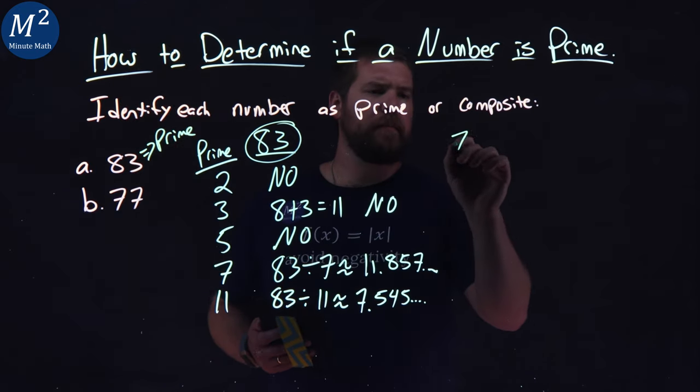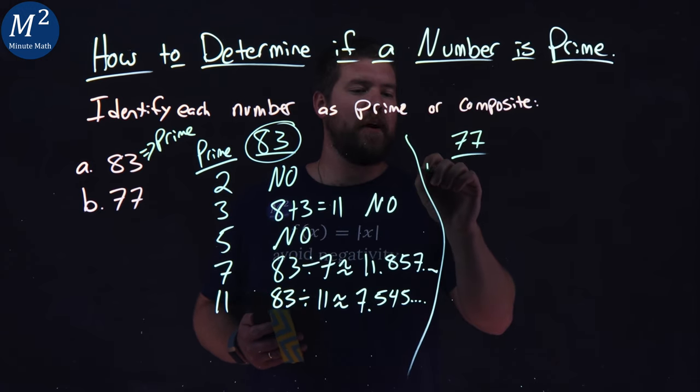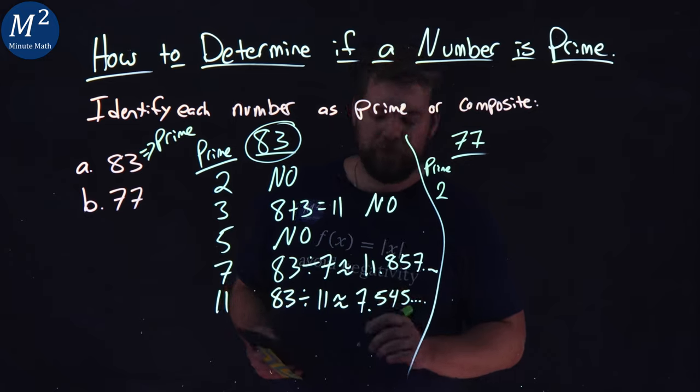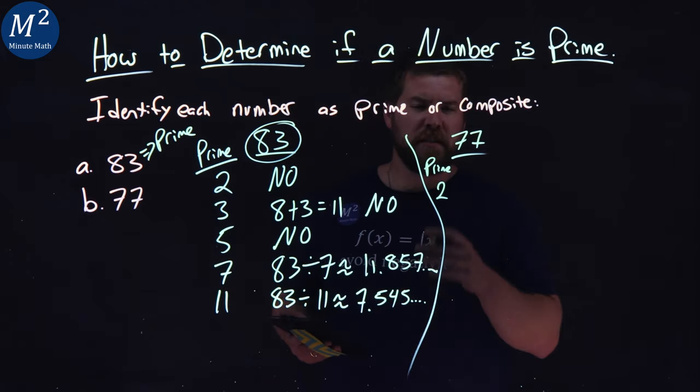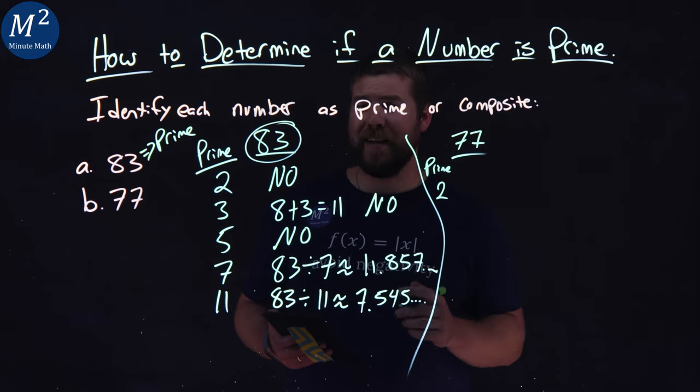What about 77? Same thing. So our prime numbers are here. Is 77 divisible by 2? Well, the last number is 7. Is it 0, 2, 4, 6, or 8? No.